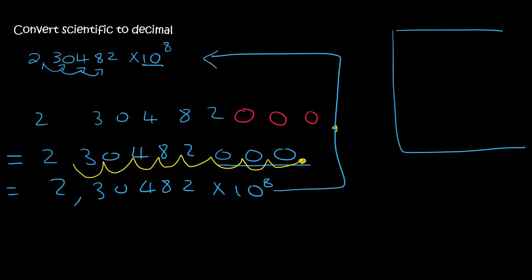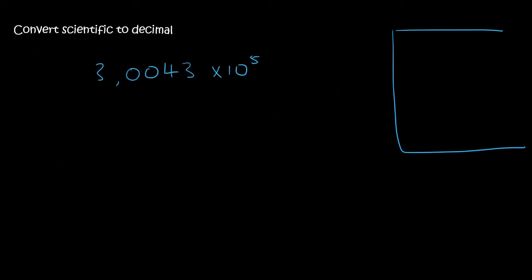And so we can see that we can switch between the two different methods, decimal and scientific. Okay. So with this one over here, we've got a times 10 to the five.